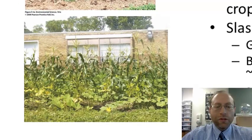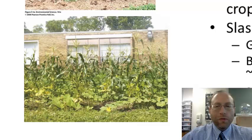In America, one example of polyculture is the way American Indians used to do some planting, called the Three Sisters: corn, squash, and beans. The corn acts as a pole for the bean vine to grow on. Corn and beans together give a complete protein. Also, corn draws nitrogen out of the soil, while the bean is a legume with nodules containing bacteria that add nitrogen back to the soil, so the two work together.